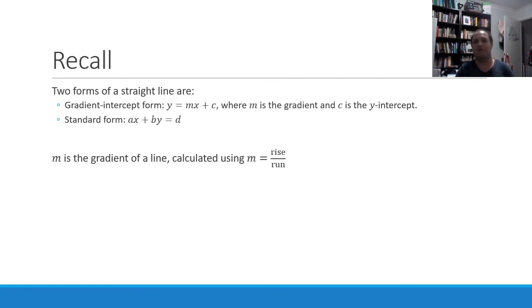So a couple of things to recall. First of all there are two forms of a straight line. The first one is the gradient form y equals mx plus c, m is the gradient, and c is the y-intercept. And there's also a standard form where a, b, and d are all integers.